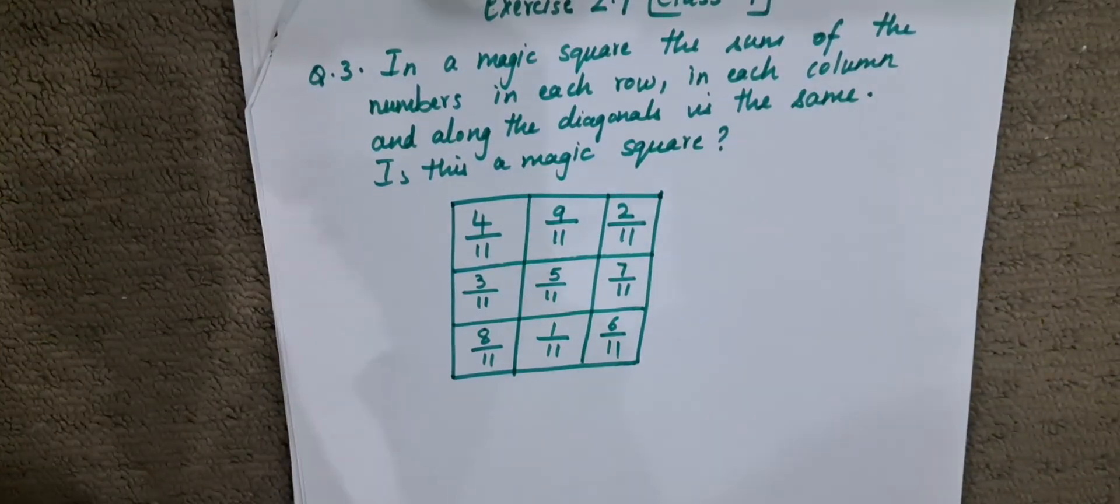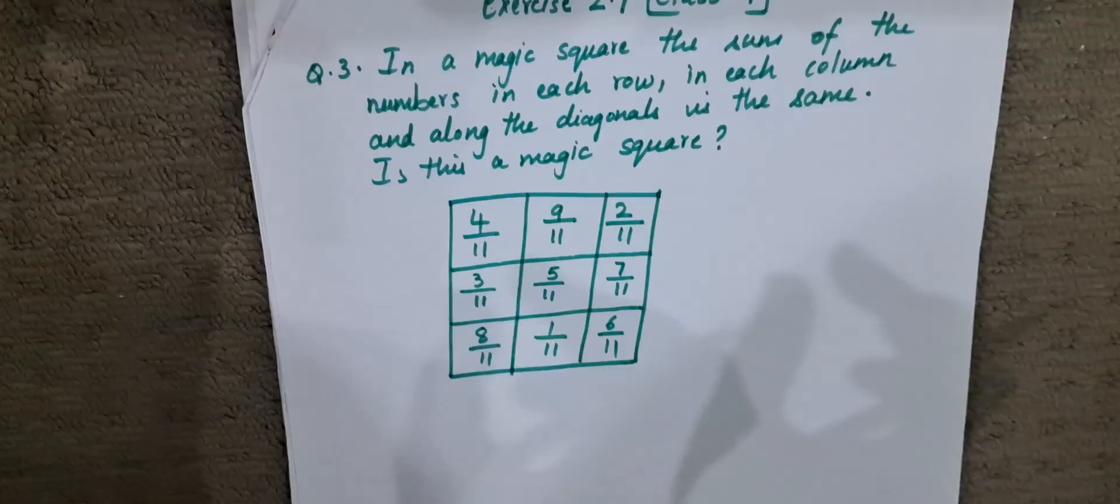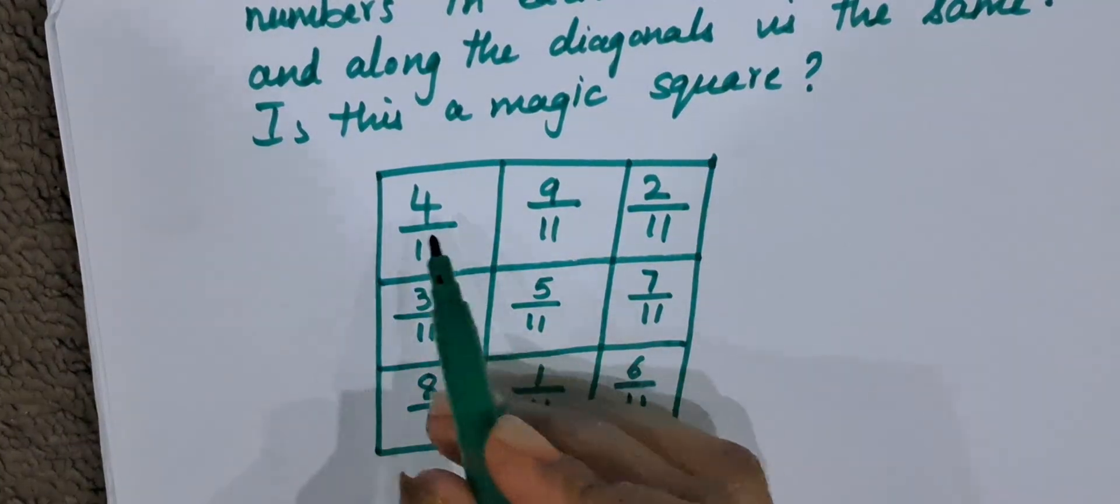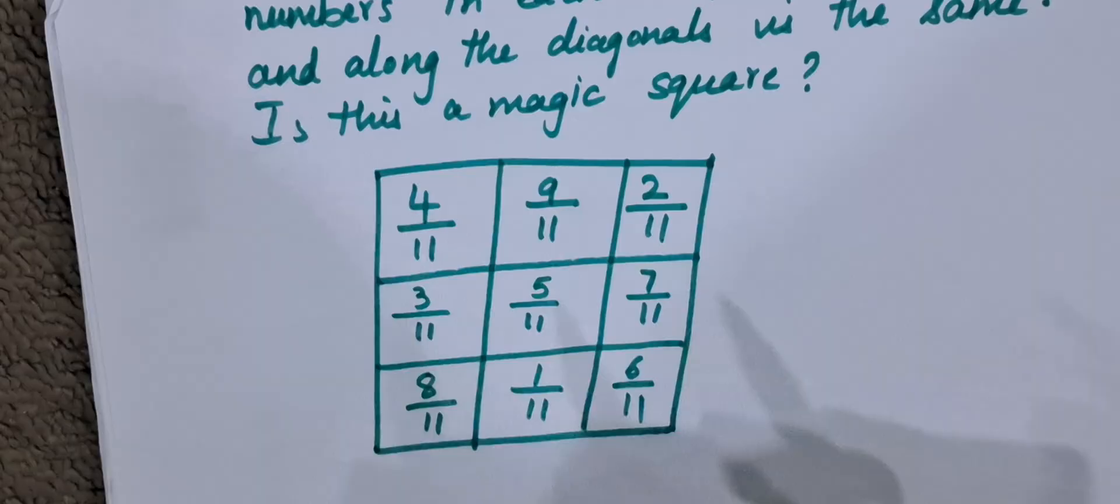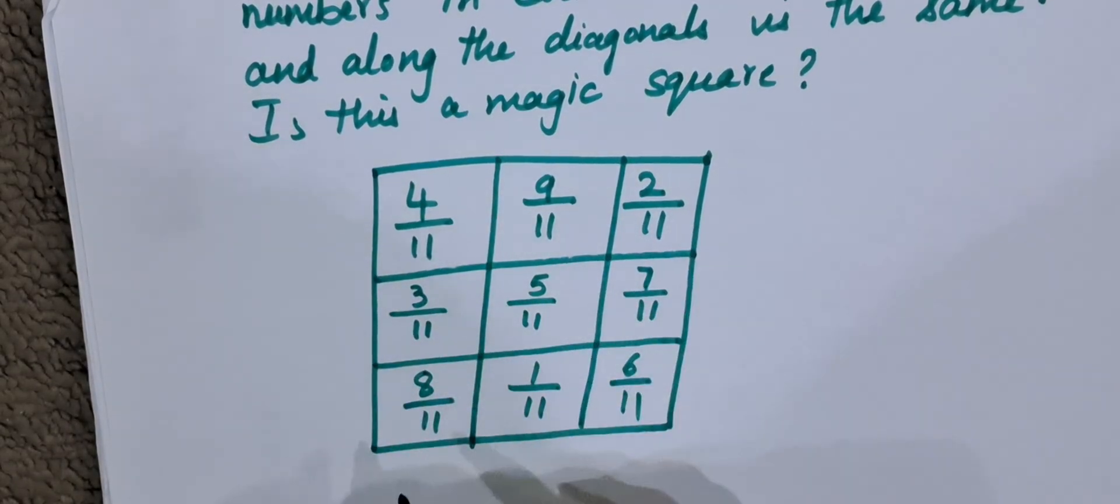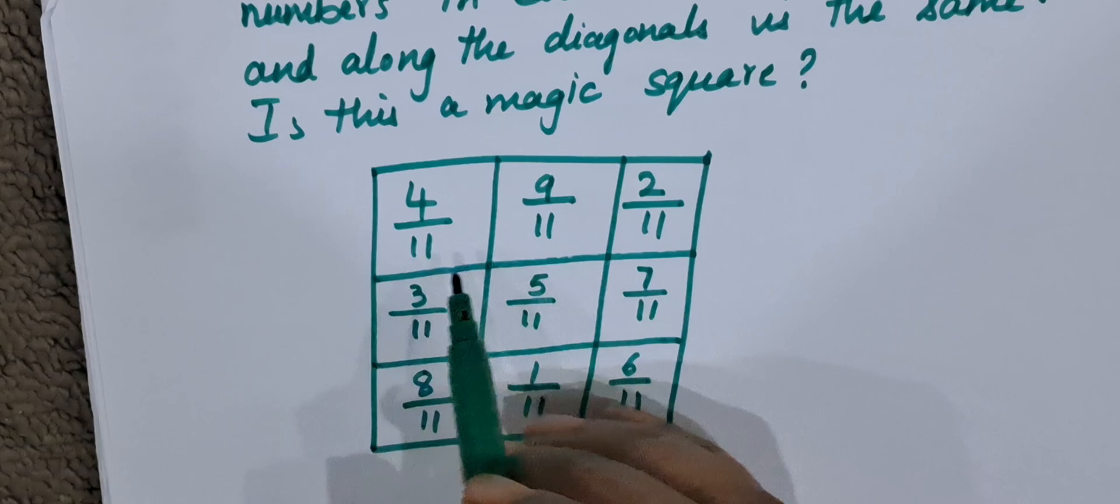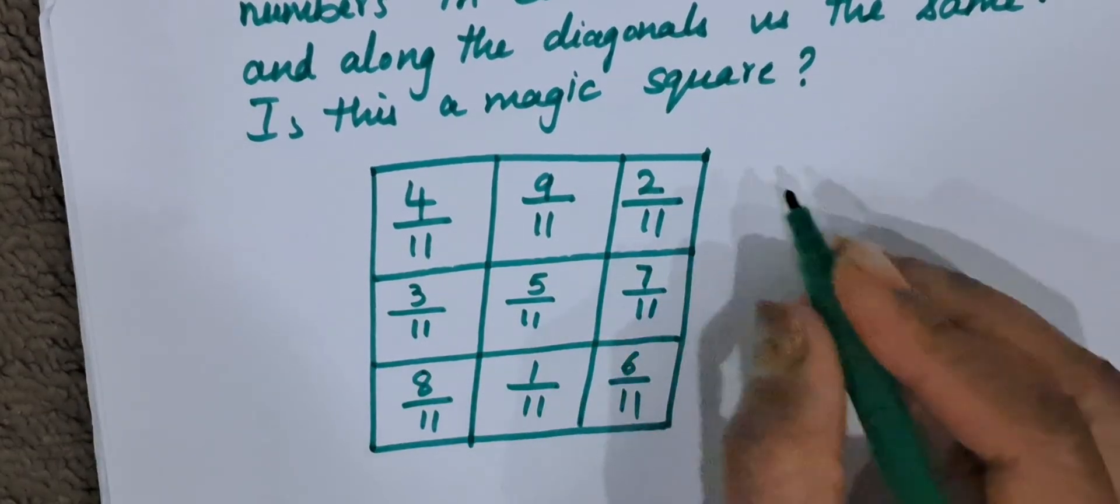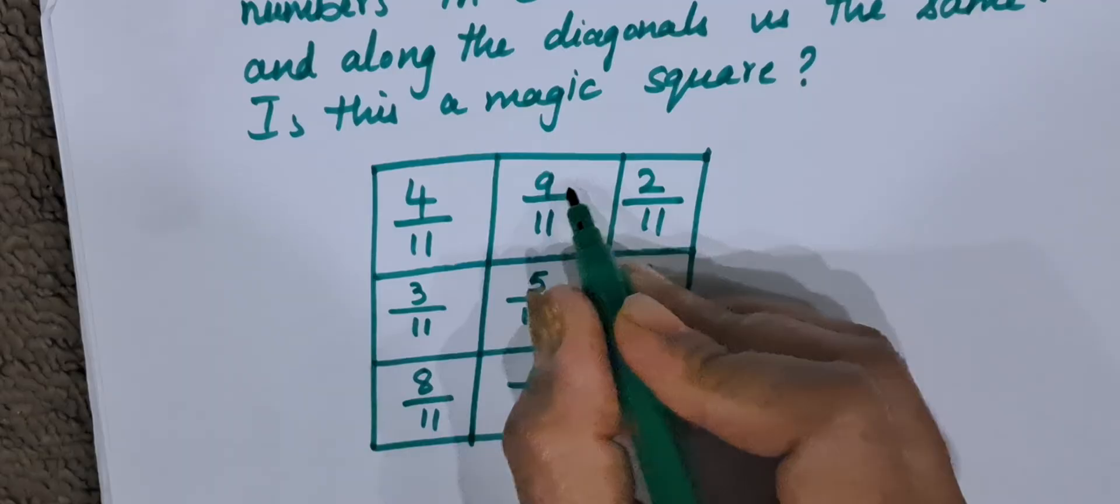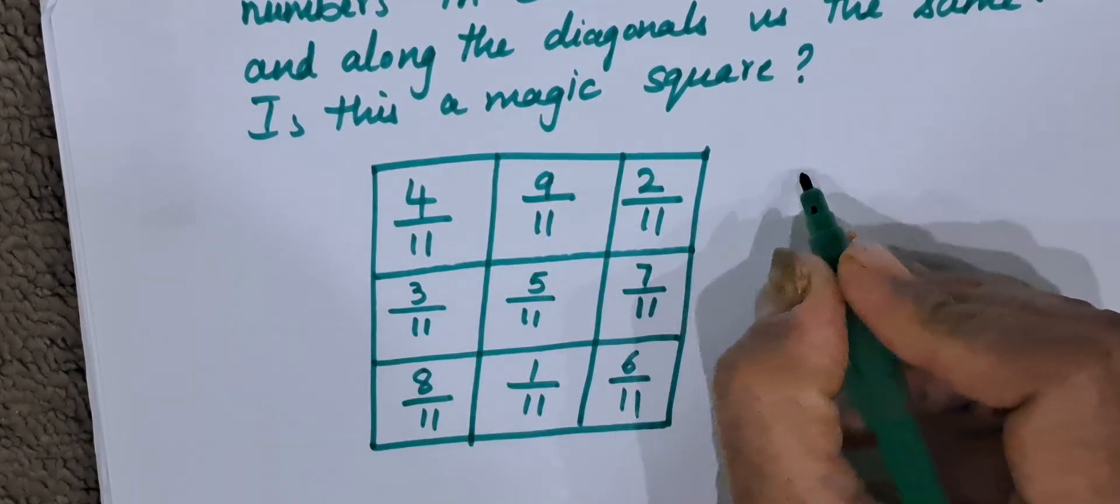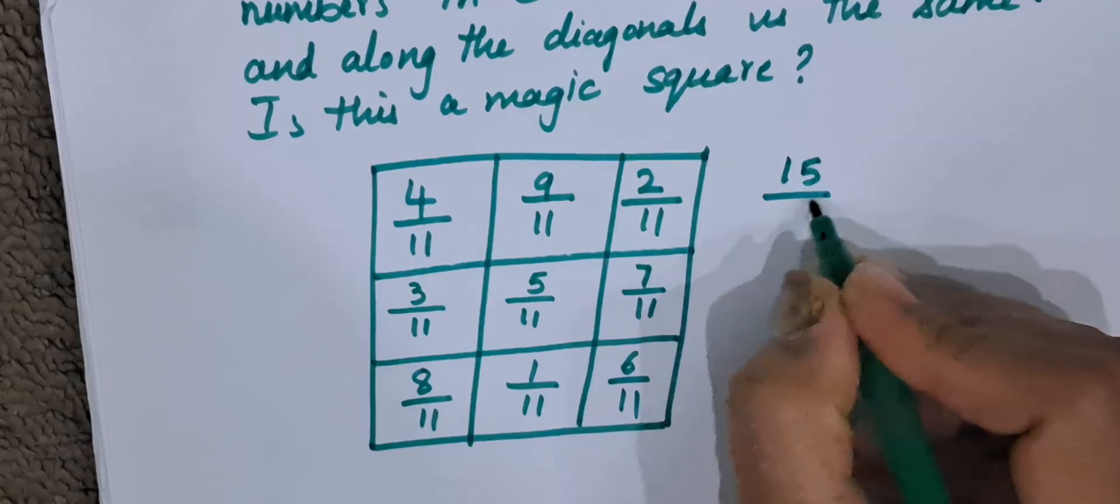Let us take the first column. In the first column, the numbers are 4 by 11, 9 by 11, and 2 by 11. Since they are like fractions, that is the denominators are same, it is easy for us to add. 4 plus 9 is 13 plus 2 is 15. So the answer becomes 15 by 11.